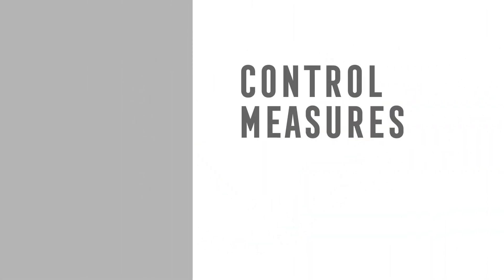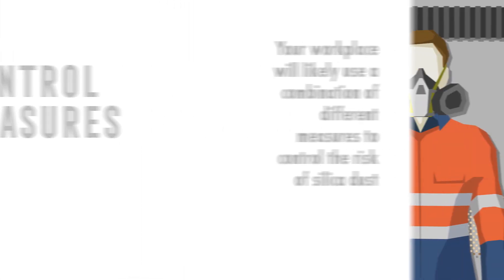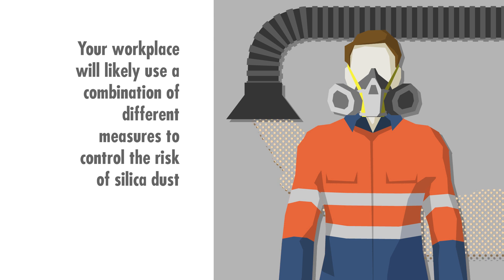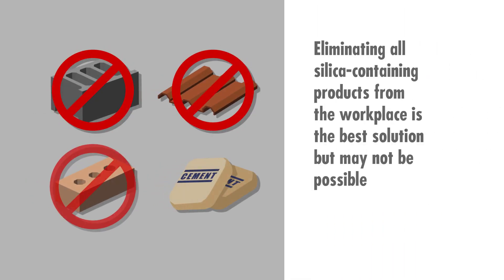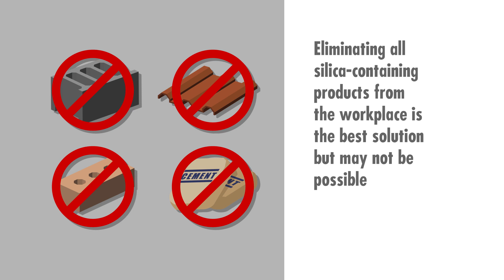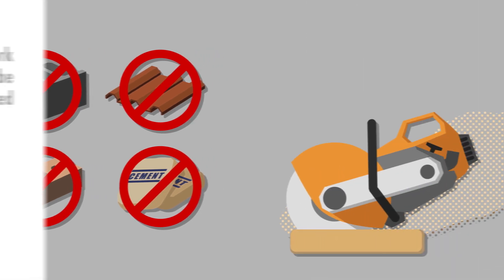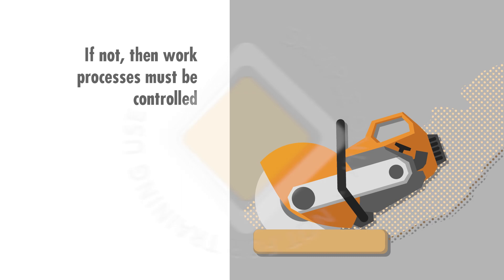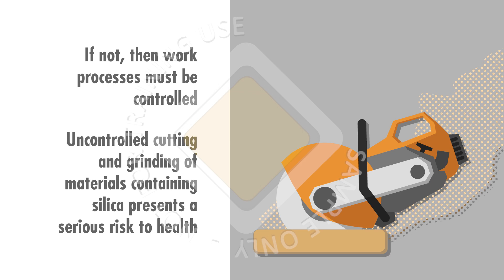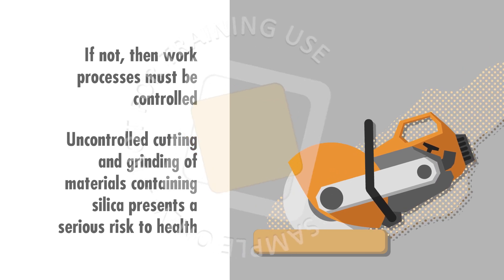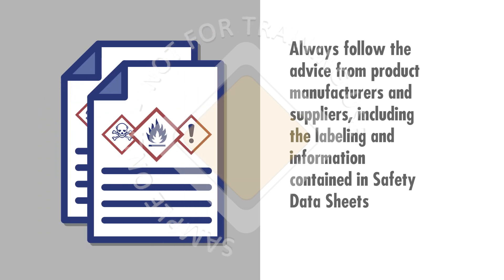Control measures. Your workplace will likely use a combination of different measures to control the risk of silica dust. Eliminating all silica-containing products from the workplace is the best solution, but may not be possible. If not, then work processes must be controlled. Uncontrolled cutting and grinding of materials containing silica presents a serious risk to health. Always follow the advice from product manufacturers and suppliers, including the labeling and information contained in safety data sheets.